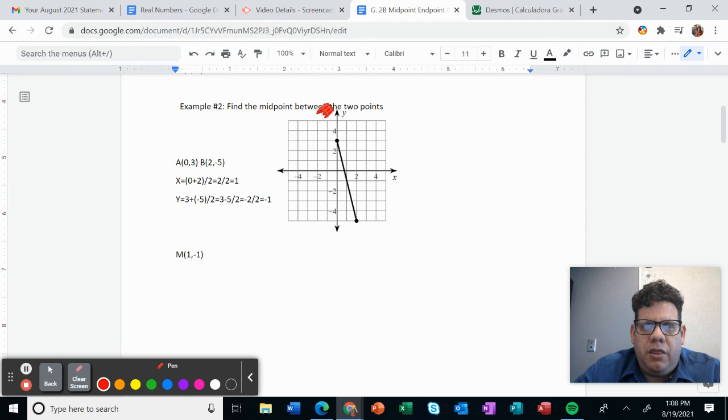find the midpoint between the two points, what points, the first and the second, let's call them A and B. A and B, so A is located right here in 0, 0 for the x-axis, and 3 for the y-axis, just here. And B, which is the second point, is located.